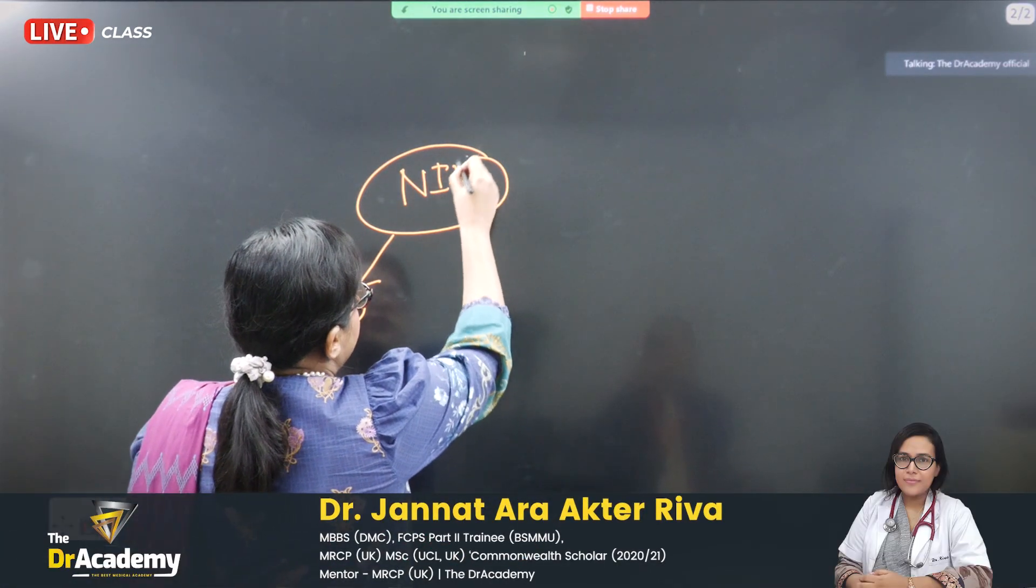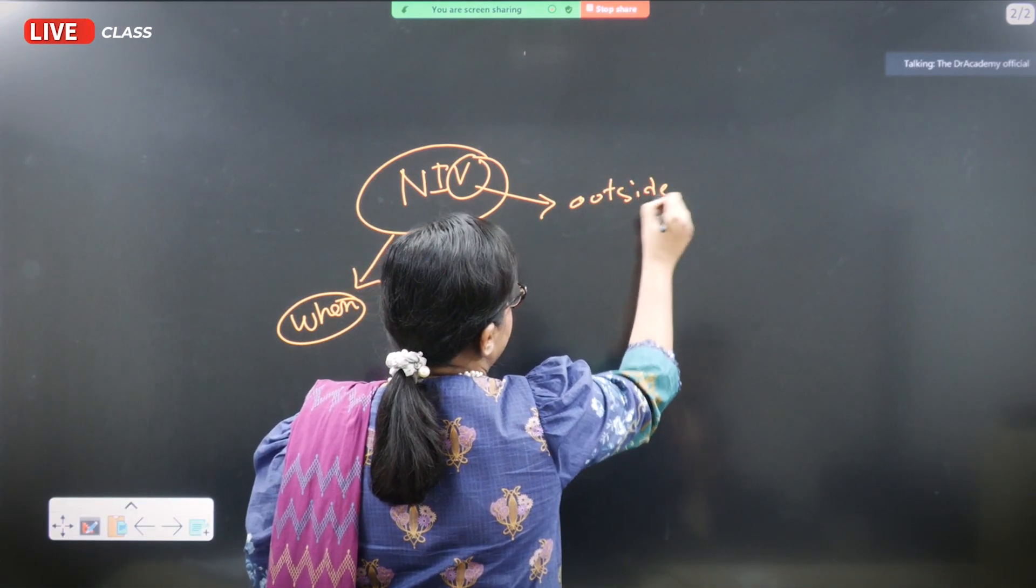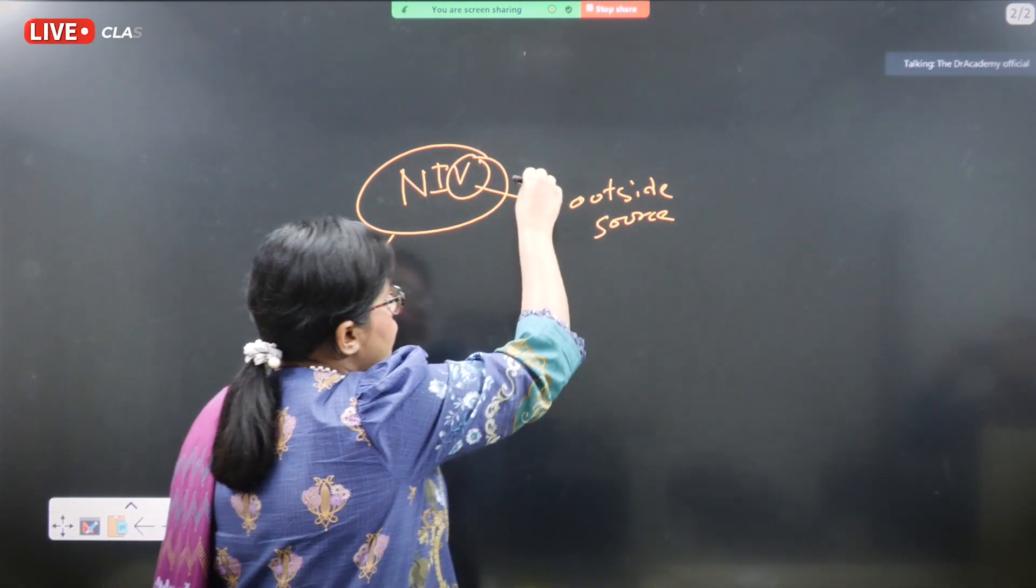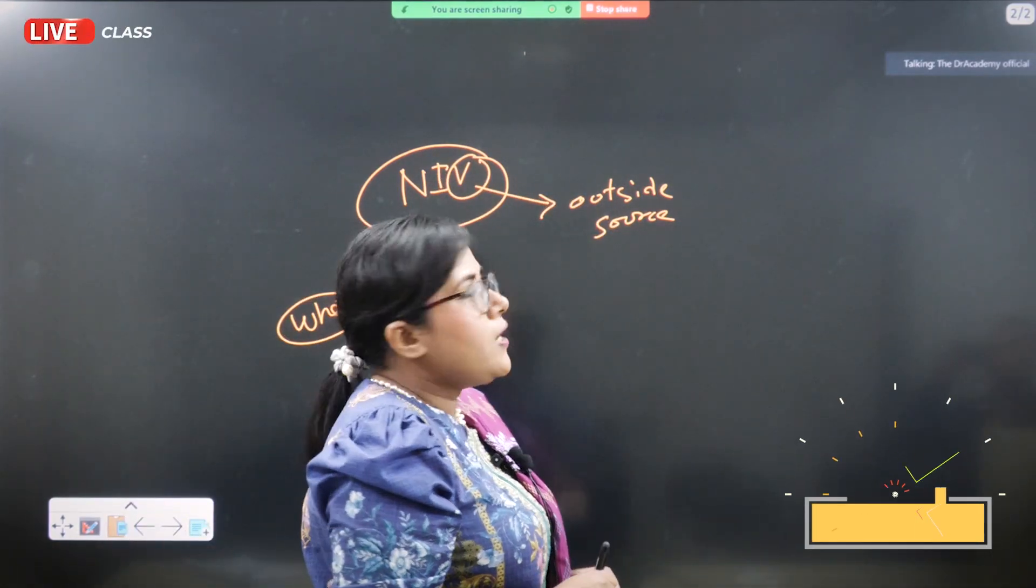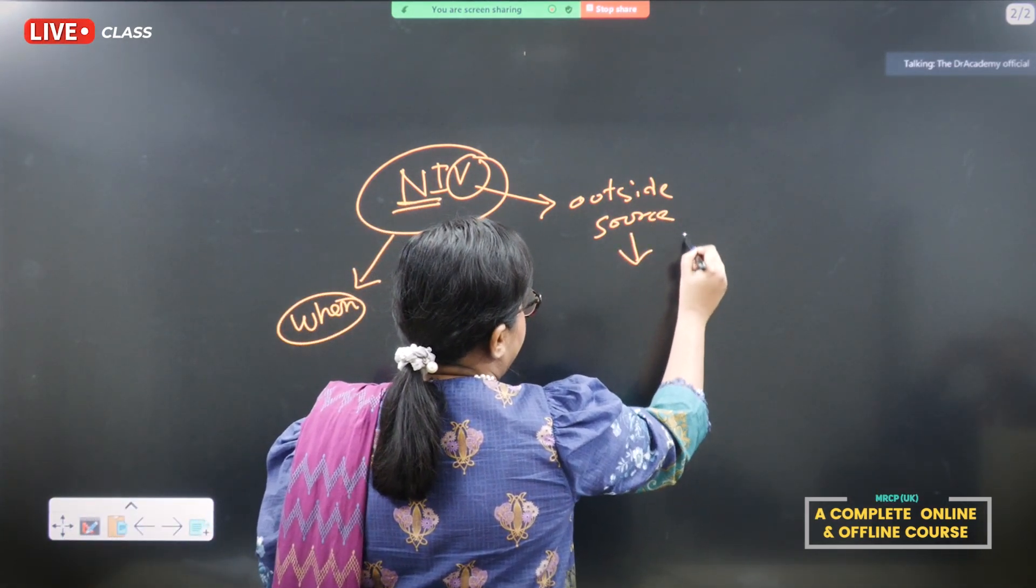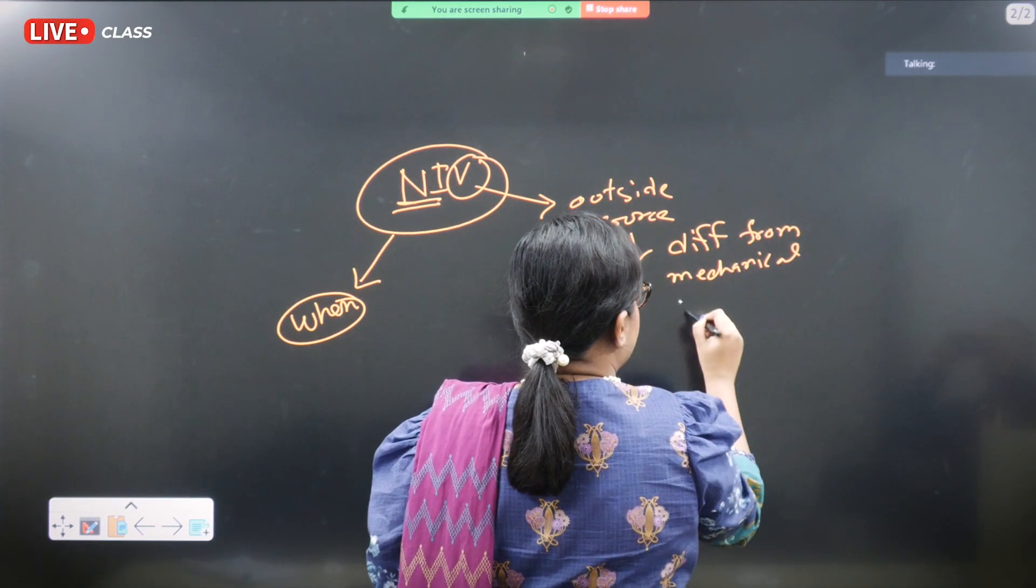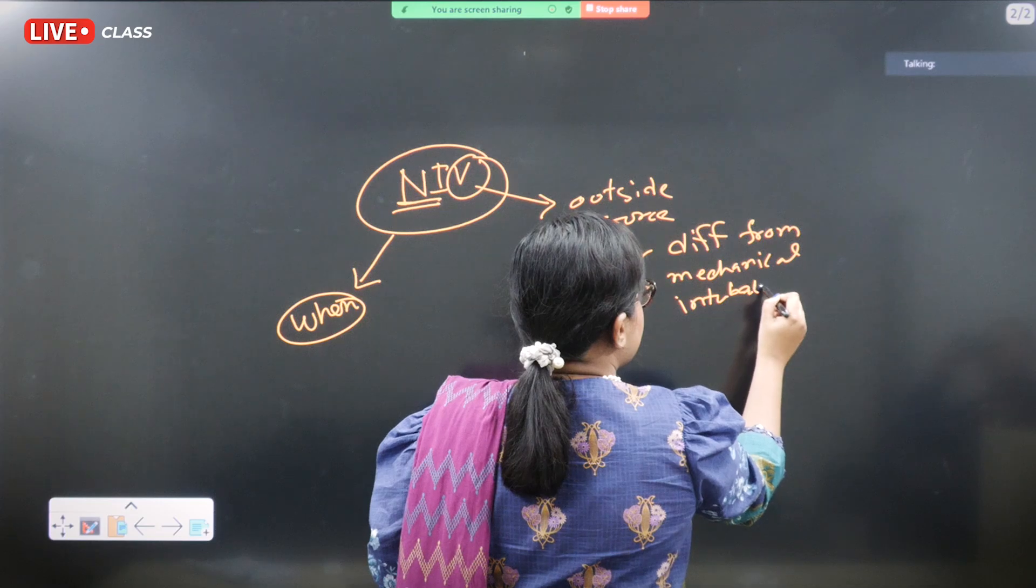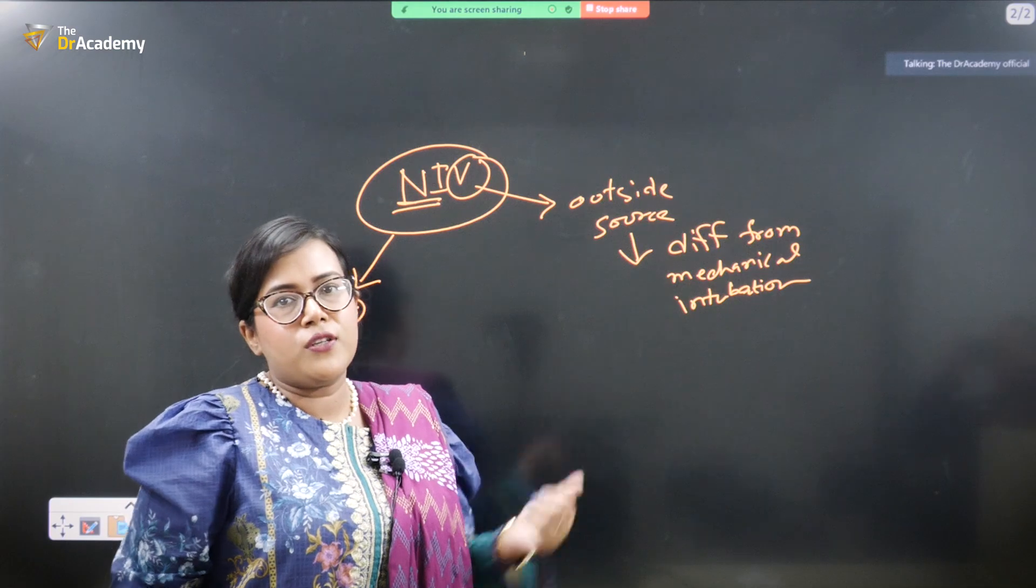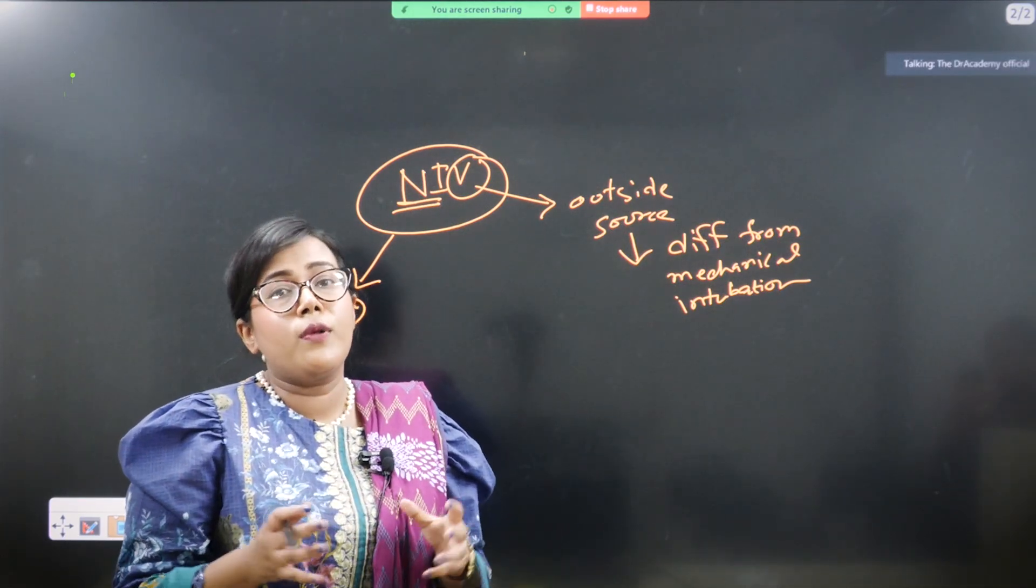So for non-invasive ventilation, that means ventilation is given from the outside source, and the way of giving this outside source ventilation or assisted ventilation is non-invasive. This is different from mechanical intubation which is commonly seen in the ICU settings. Most of the ICU patients are unconscious patients and they are given mechanical intubation to continue their normal breathing pattern.